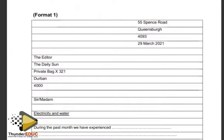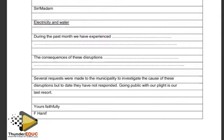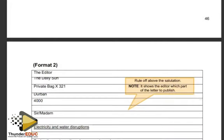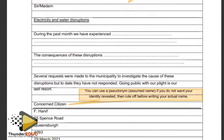The letter to the editor: your address, then the editor, name of the newspaper, address of the newspaper, then 'Sir or Madam' without the 'Dear,' then your subject line underlined. Get straight to the point: 'During the past month, we have experienced the following.' Bring in consequences of these disruptions. Several requests were made — be very specific. We are writing for serious purposes, so get straight to the point. Please make sure we understand all the types of letters so we can bring them across.